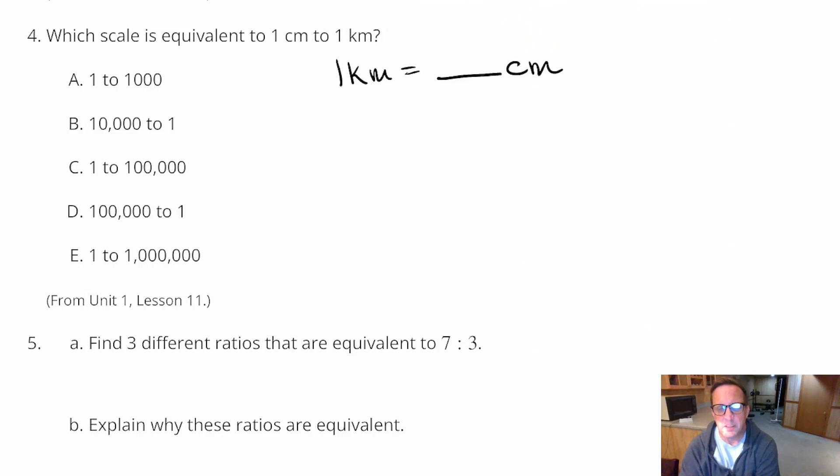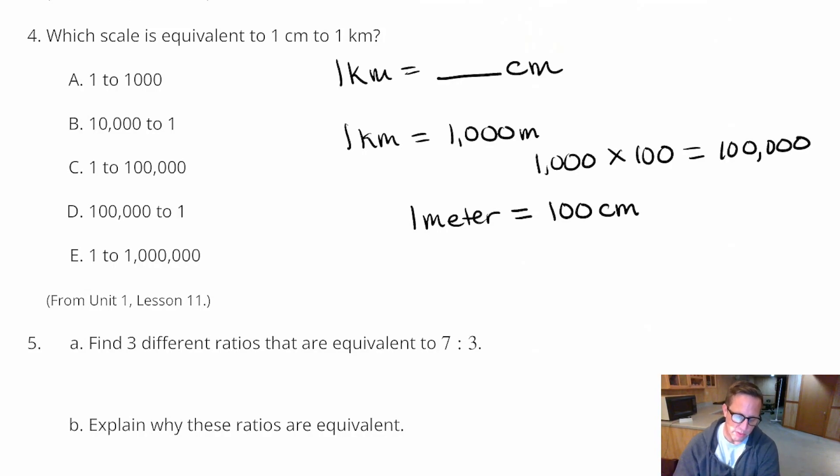We haven't done that. So, let's just kind of break this down intuitively. Now, one kilometer is equal to a thousand meters. Okay? A thousand meters. I also know that one meter is equal to a hundred centimeters. One meter equals a hundred centimeters. And so, one kilometer would be a thousand hundreds. A thousand hundreds, which is a hundred thousand. That's a thousand times a hundred, which is going to be one hundred thousand.